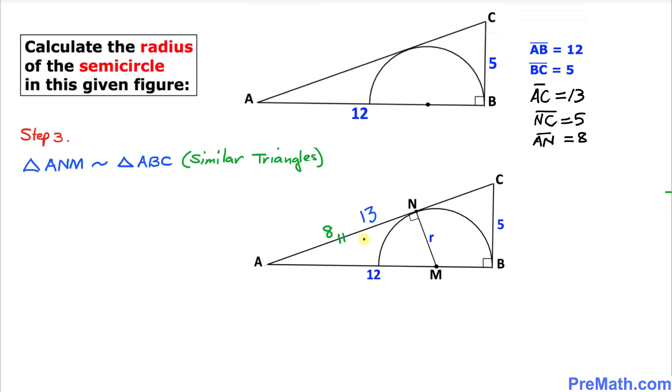Therefore, we can write this as a proportion. I can write R divided by 8 in the smaller triangle equals 5 divided by 12 in the bigger triangle ABC.